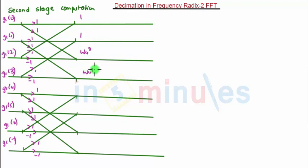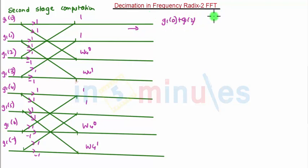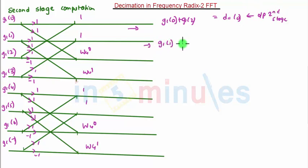The twiddle factors are W4 raised to 0 and W4 raised to 1, and the same factors appear below: W4 raised to 0 and W4 raised to 1. Forming the equations: g1 of 0 is added with g1 of 2, giving g1 of 0 plus g1 of 2. Similarly, g1 of 1 multiplied by 1 gives g1 of 1, and g1 of 3 multiplied by 1 gives g1 of 3.